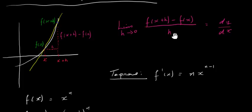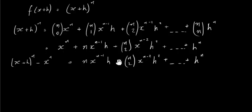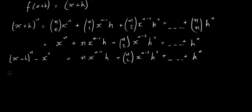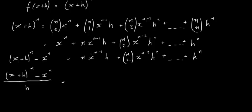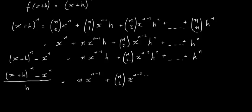Now I'm going to divide by h and then find the limit. Dividing the numerator by h: x plus h to the power of n minus x to the power of n, all over h. If we divide everything by h, we end up with n times x to the power of n minus 1 — and you can probably see where this is going. Then plus n choose 2 times x to the power of n minus 2 times h (one of the h's cancels), and so on, until the last term becomes h to the power of n minus 1.